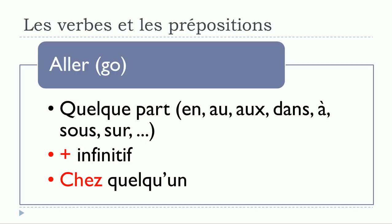Next is aller. Aller quelque part — I've listed a few prepositions: en haut, dans, à, sous, sur, etc. Then aller plus infinitif. And if you want to talk about the place where someone is living, we use chez: aller chez quelqu'un.